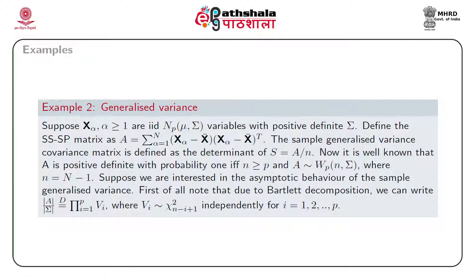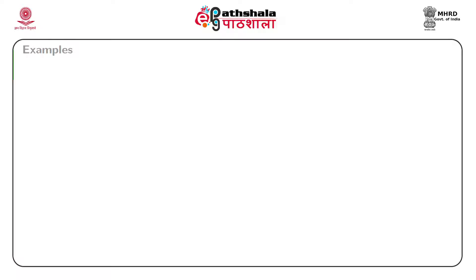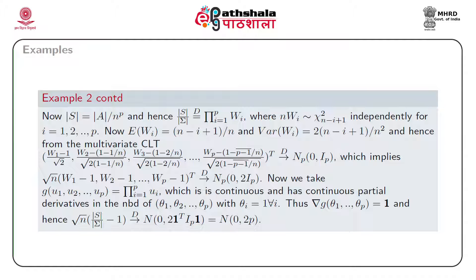To study the asymptotic behavior of sample generalized variance, we use Bartlett decomposition: det(A)/det(sigma) is distributed as the product of v_i for i from 1 to p, where v_i has a chi-squared distribution with n minus i plus 1 degrees of freedom, and the v_i's are independent. Then det(S)/det(sigma) has the same distribution as the product of w_i for i from 1 to p, where n*w_i is chi-squared with n minus i plus 1 degrees of freedom, and the w_i are also independent.